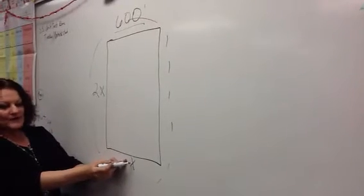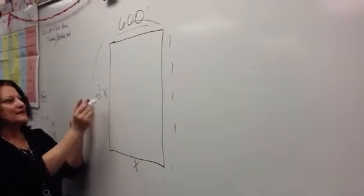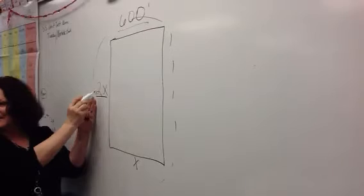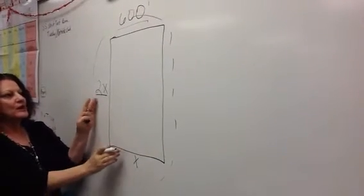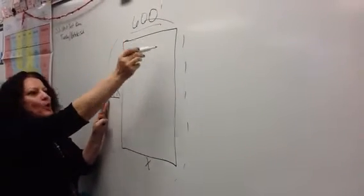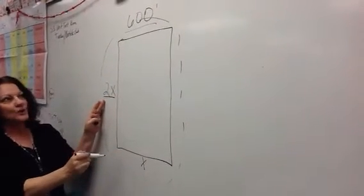So, if we say one side is x, and one side is 2 times x, because that's what the problem said, right? The length is twice the width. We are going to say that if you add up all the sides, you are going to get 600.